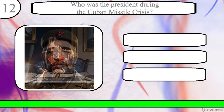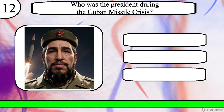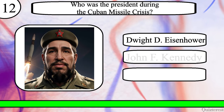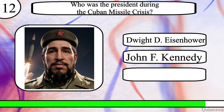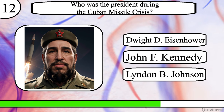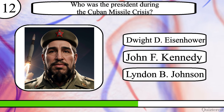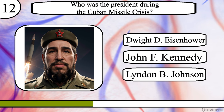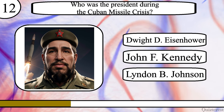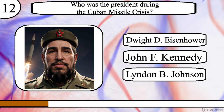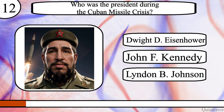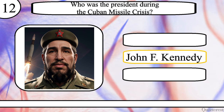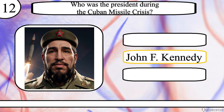Question 12. Who was the President during the Cuban Missile Crisis? Dwight D. Eisenhower, John F. Kennedy or Lyndon B. Johnson? The correct answer is John F. Kennedy.